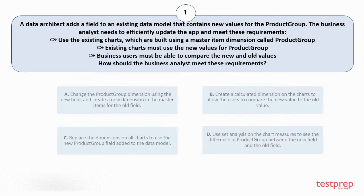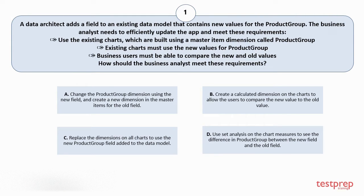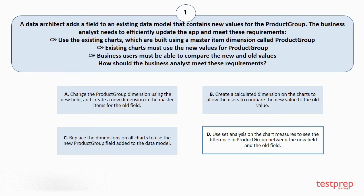Your options are: A. Change the product group dimension using the new field and create a new dimension in the master items for the old field. B. Create a calculated dimension on the charts to allow the users to compare the new value to the old value. C. Replace the dimensions on all charts to use the new product group field added to the data model. D. Use set analysis on the chart measures to see the difference in product group between the new field and the old field. The correct answer is option D.